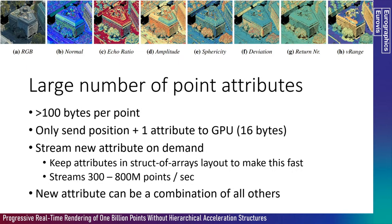Another consideration: what do we do with point clouds that have a large number of point attributes? With each attribute, the number of bytes per point increases considerably — we've had point clouds with around 100 bytes per point, which means 100 million points is already about 10 gigabytes. Our method claims to render any number of points that fit in CPU memory in real time, but that's not exciting if we can only fit 100 million points. So we only send the position and one attribute to the GPU, needing just 16 bytes per point. On our RTX 2080 with 11 gigabytes, we can comfortably fit and render 500 million points, and on a Titan RTX with 24 gigabytes, we were able to render 1 billion points directly in real time.